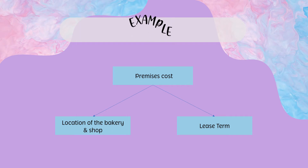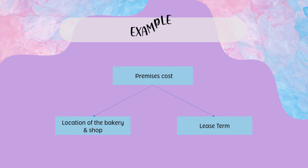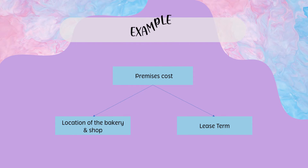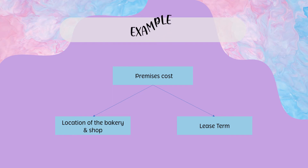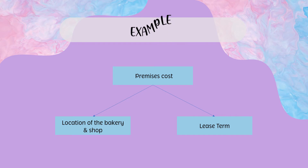Next, another example is the cost driver for premises cost. There will be two possible cost drivers: the location of the bakery or shop, and the lease term. Basically, you have to think about how many cost drivers are possible and relevant for the specific cost, then choose the best one from the list.